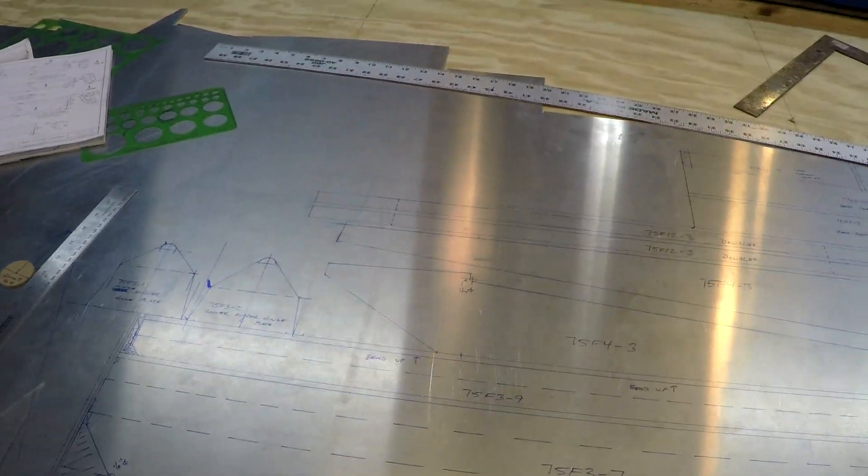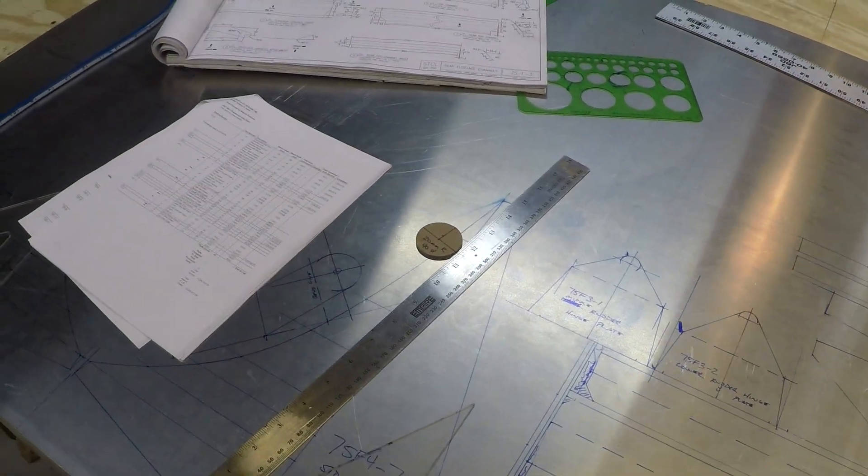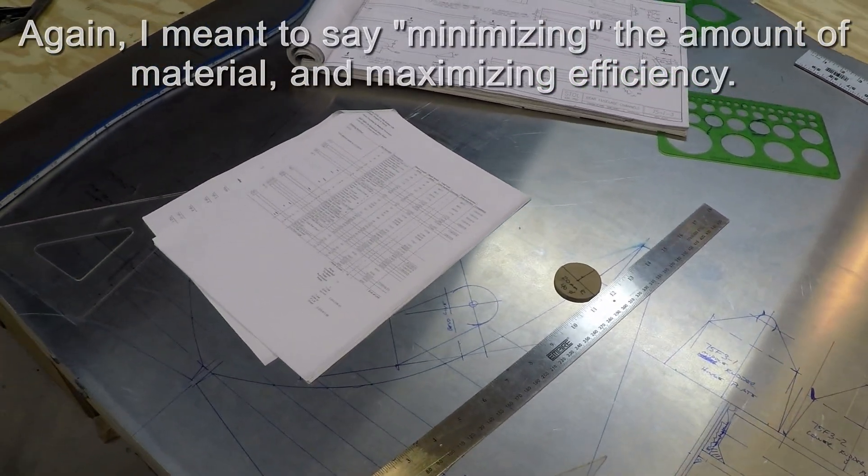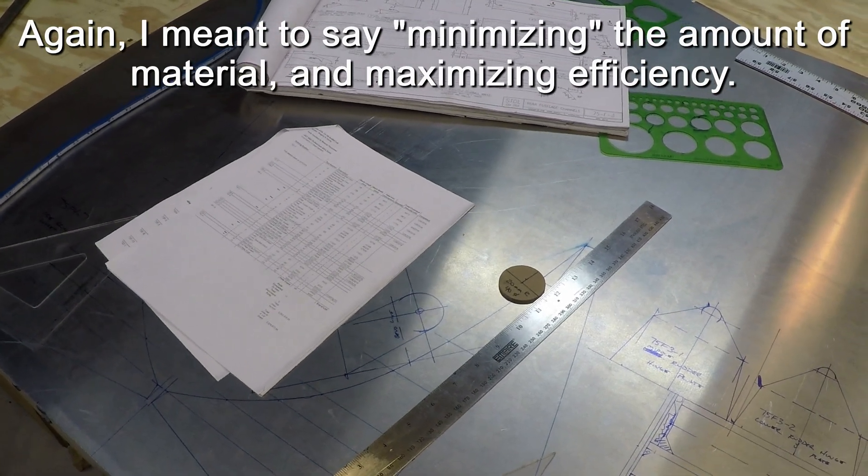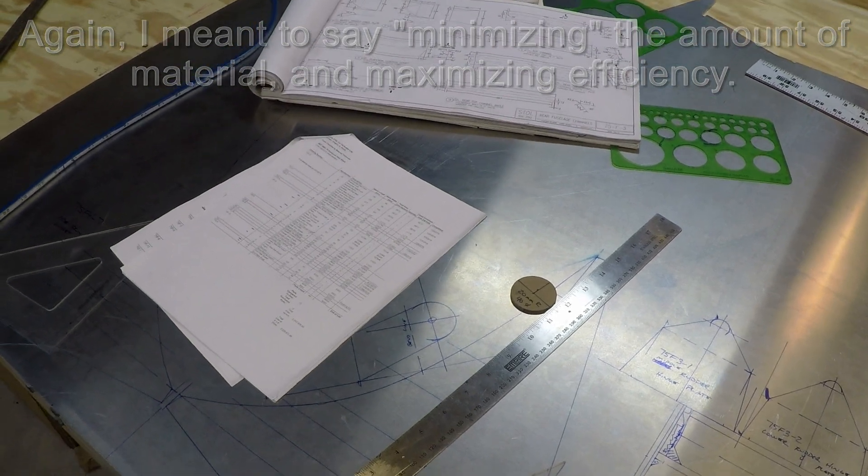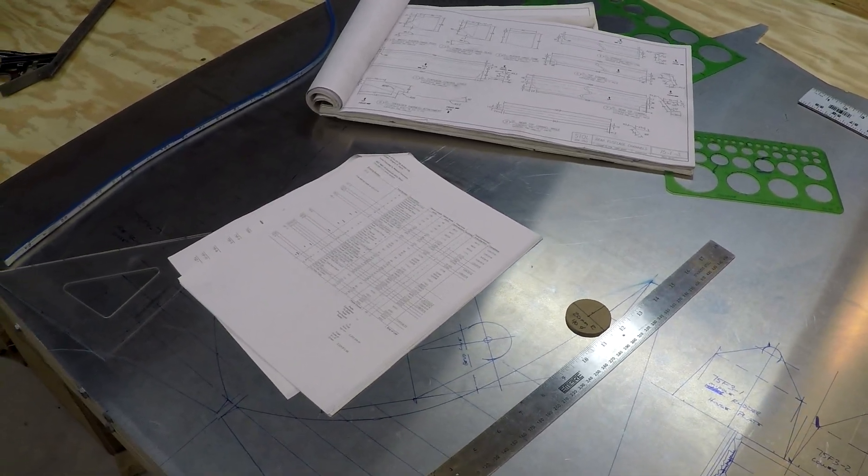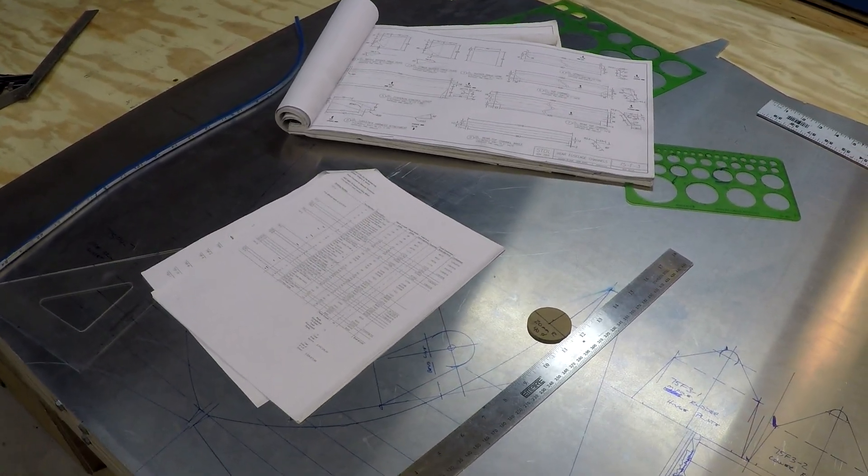Anyway, I hope those few tips give you an idea on how to quickly and easily lay out your parts manually while somewhat maximizing the amount of material you're using. Again, you can do this with a CAD program and a nesting program, and it'll really maximize the amount of material you're using. But I found this to be much faster, but use whatever method works for you, but if you don't want to get into redrawing the whole airplane in a CAD program, you can certainly do it this way.